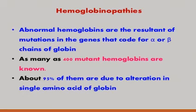What are hemoglobinopathies? Abnormal hemoglobins are the result of mutations in the genes that code either for the alpha chain or the beta chain of globins.